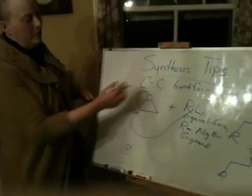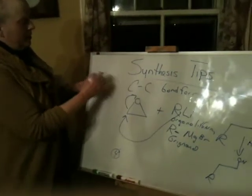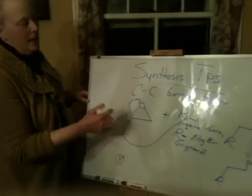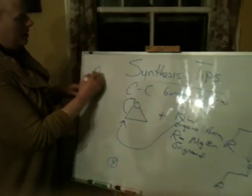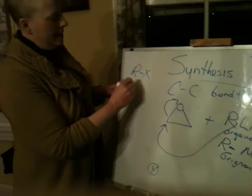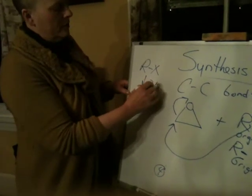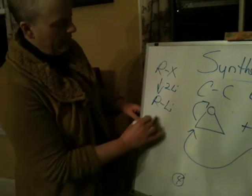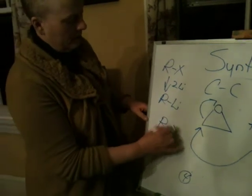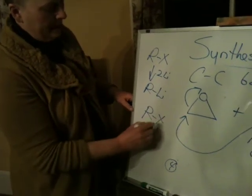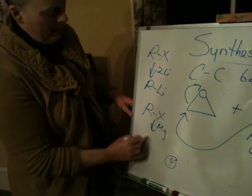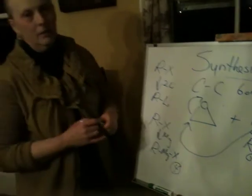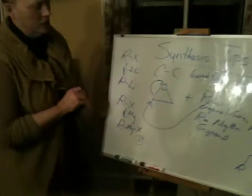The way you make Grignards is from halides, and the way you make organolithiums is also from halides. For example, if you have RX where X is a halide and you add two equivalents of lithium, you will have an organolithium. If you have RX and you add magnesium, you will make a Grignard. We'll go over this in more detail — Grignards will be studied throughout the whole semester.